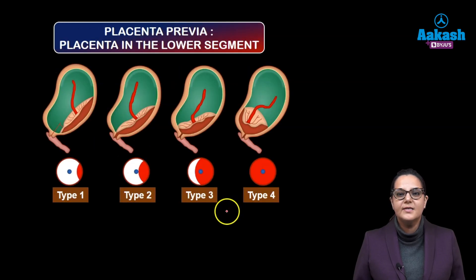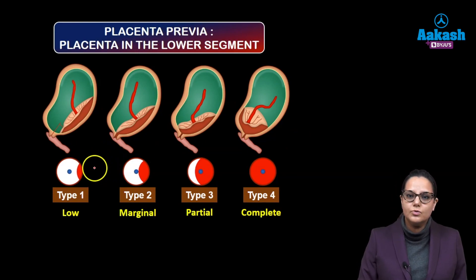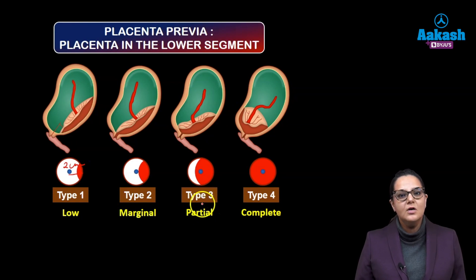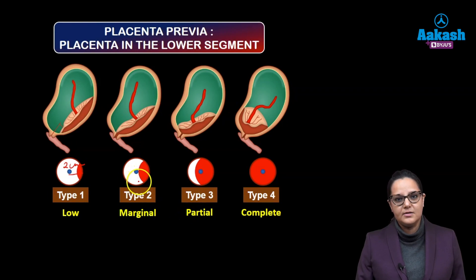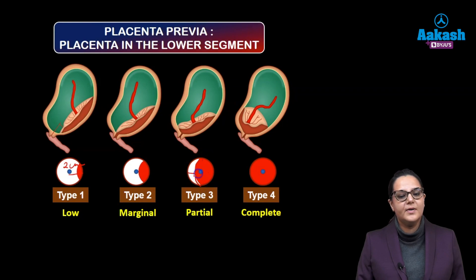First of all, what is placenta previa? It is any placenta which is lying in the lower segment. As per the older classification, placenta previa was divided into four types. Type 1, also known as the lobe, where the distance of the lower edge of the placenta from the internal os was 2 cm. The second was marginal, where the lower edge of the placenta is reaching the internal os but not covering it. Type 3 is partial, where it is reaching the internal os and also covering it partially, with part of the os left uncovered.